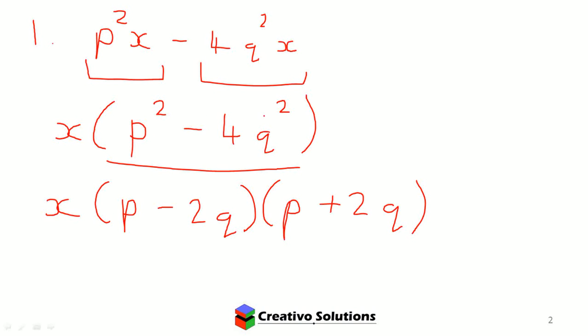And that would be factorizing that particular expression. Because you had squares here and you had two terms and it's a difference of two squares, I can then write out an expanded form of that particular expression with two factors: P minus 2Q and P plus 2Q.